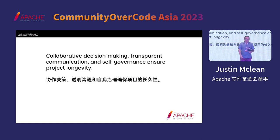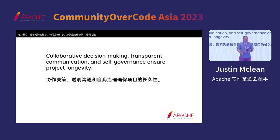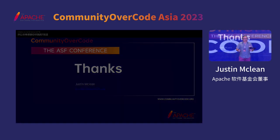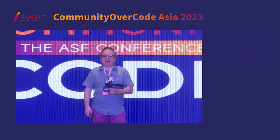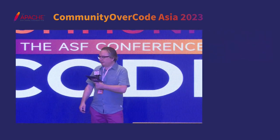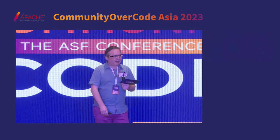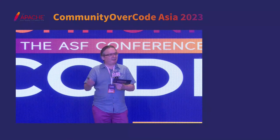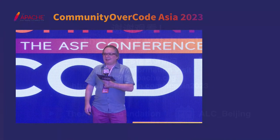Finally, I think the way that projects can last over time comes down to three things: collaborative decision-making, transparent communication, and self-governance. Thank you very much for listening. I'll be around for the next couple of days, so if you have any questions or want to chat about any ASF stuff, please come up and speak to me. Thank you.